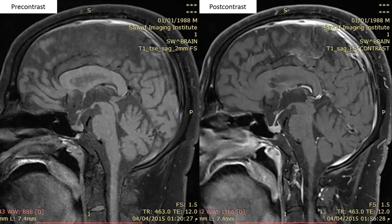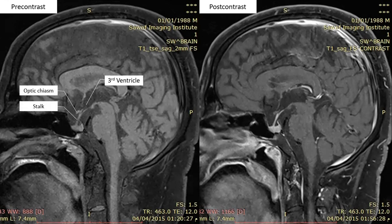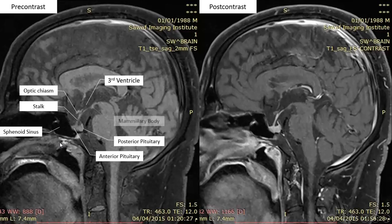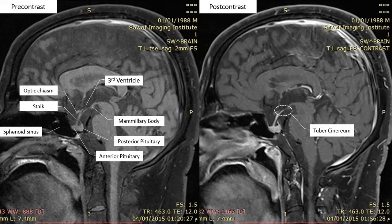This is a sagittal image for the same patient, also pre- and post-contrast. This is the third ventricle, the optic chiasm, the pituitary stalk, the anterior pituitary, and just posterior to it, the posterior pituitary — seen as a bright line posterior to the anterior pituitary. Another important component is the sphenoid sinus, which is the entrance for trans-sphenoidal surgeries, the most common approach for pituitary tumors. The mammillary body is also important, and the tuber cinereum — the area between the pituitary stalk and the mammillary body — is a very important site for lesions in precocious puberty.